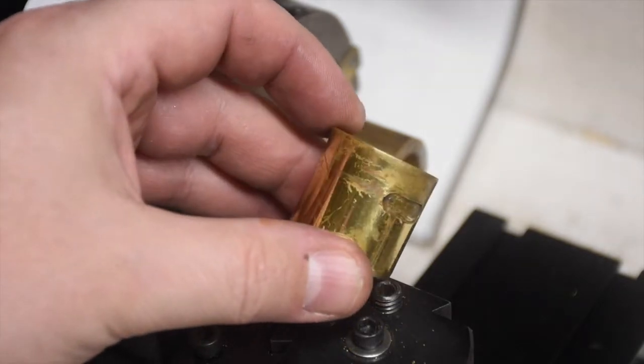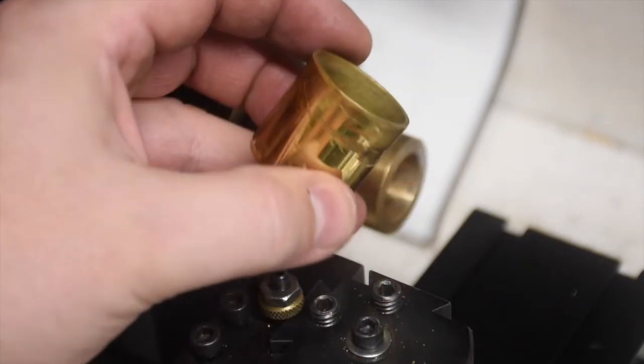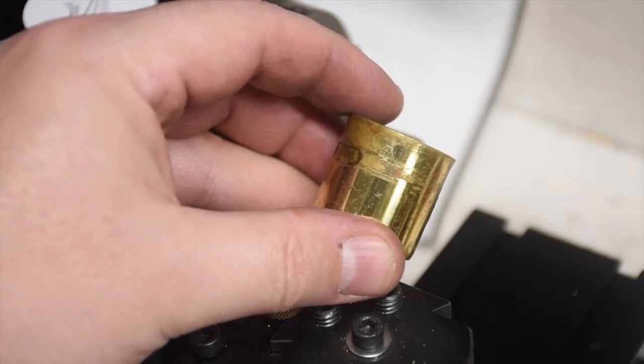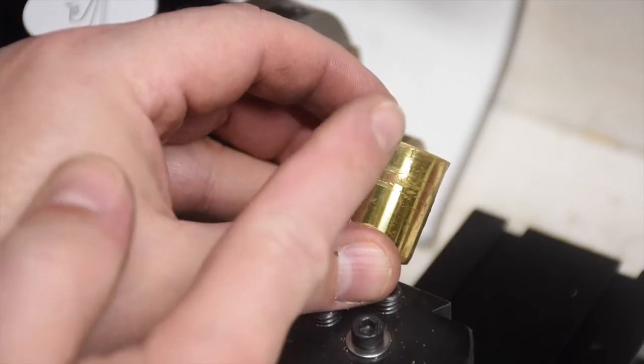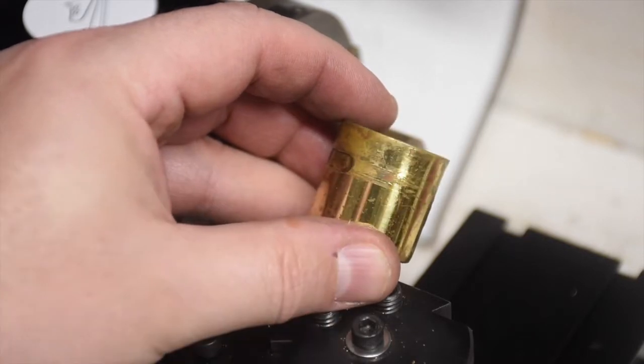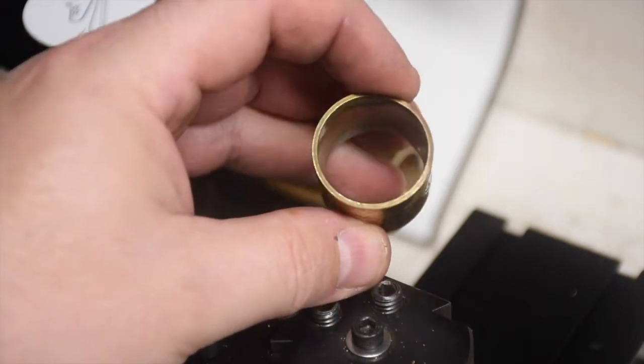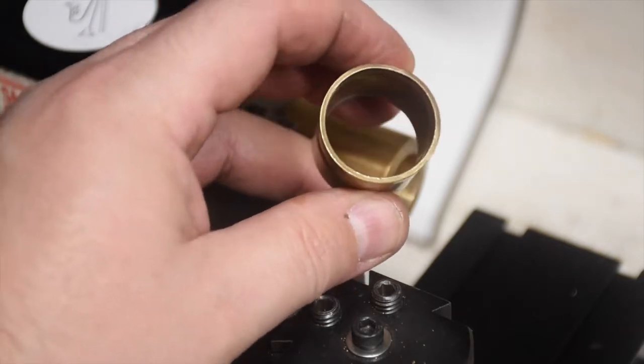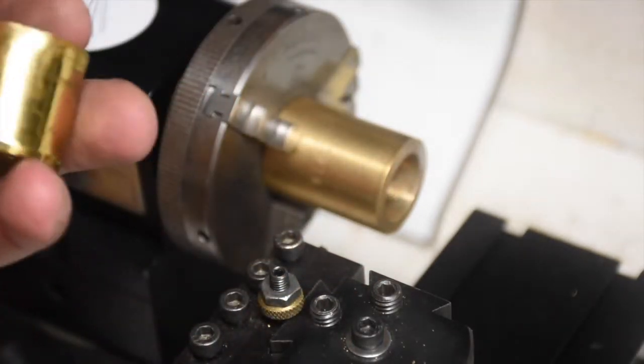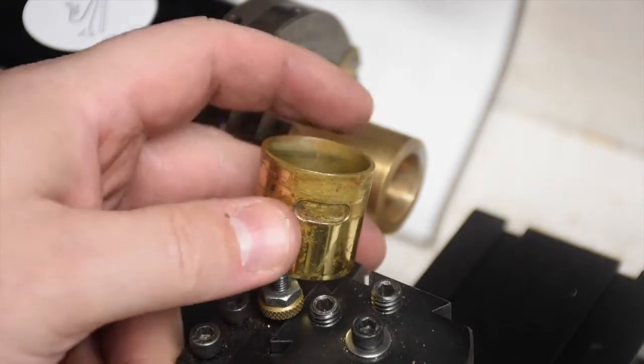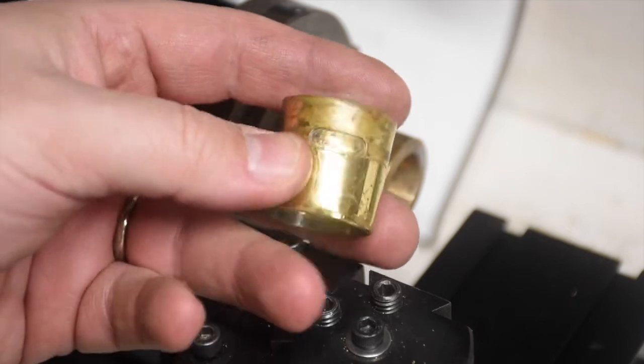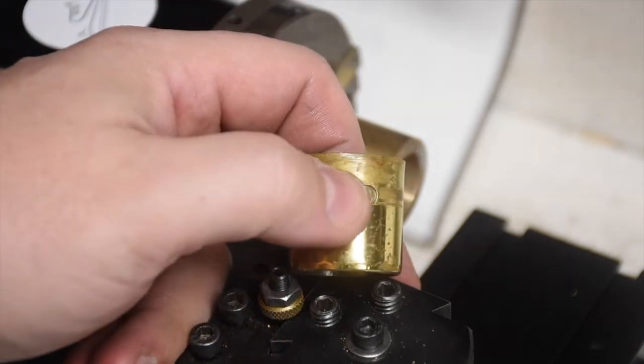We have here a neck receiver from a Martin committee alto saxophone. You may be able to see, if I can align it with a straight edge there, you can see how it's belled out at the top and the whole thing took a whack at some point so it's not round and it doesn't fit very well. So I'm going to make a new one.